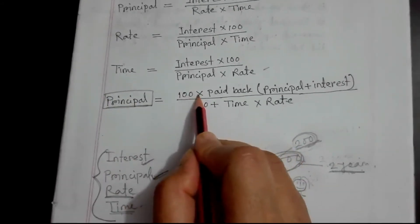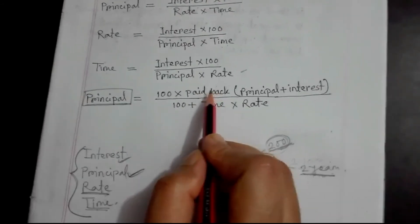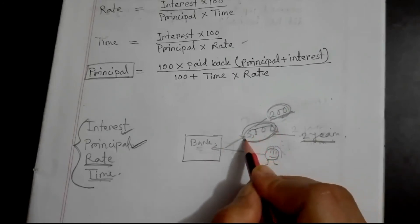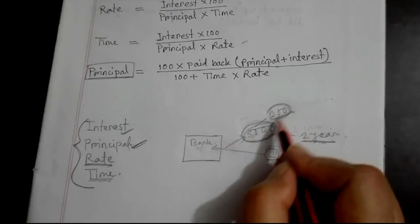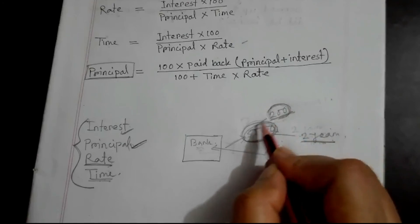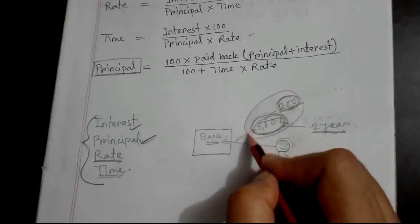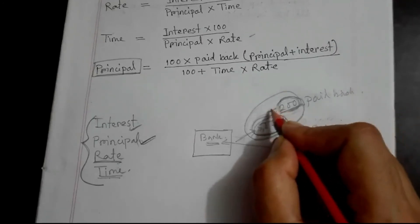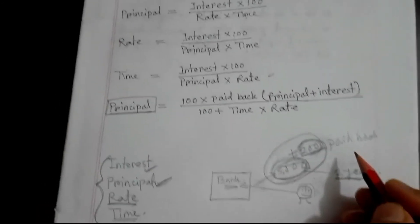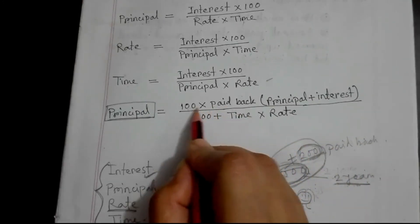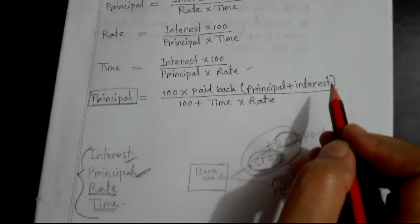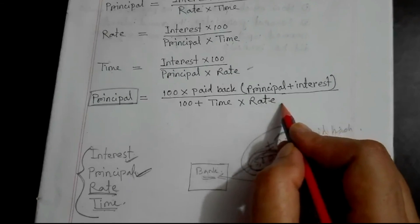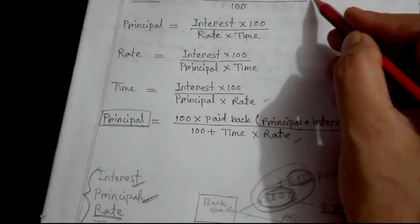The amount is 100 into payback. Payback means principal plus interest. So Amount equals principal plus interest, divided by 100 plus time into rate. A formula we use is the same way, A formula at 100.